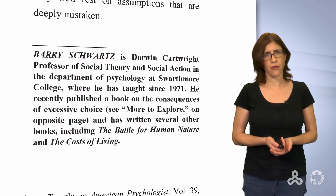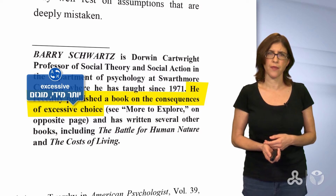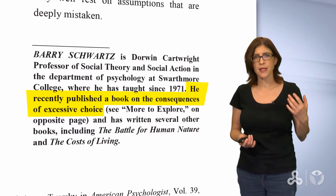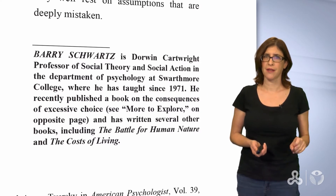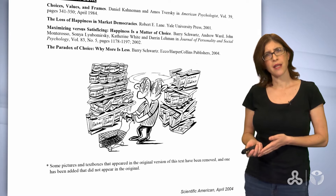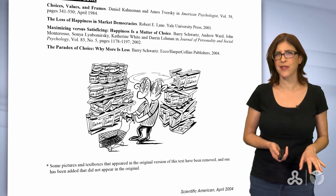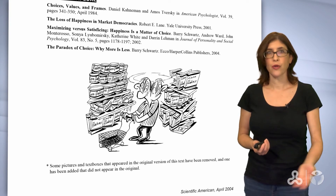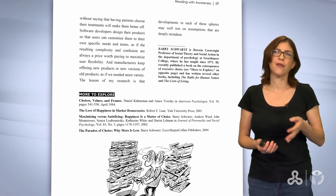Another interesting piece of information is that our writer has recently published a book on the consequences of excessive choice. So now we can be sure that our writer is not just stating his opinion — he has been studying this issue and has even written a book about it. He must be an authority on this topic. Did you notice the illustration on this page? The man in the picture is surrounded by too many things to choose from. He looks stressed and confused. Do you feel like that sometimes in the supermarket, shopping for clothes, or buying a new mobile phone? It can be quite frustrating.